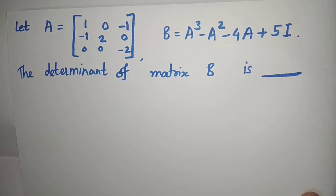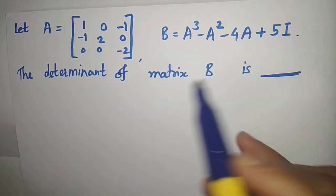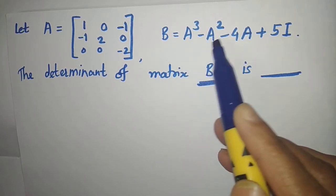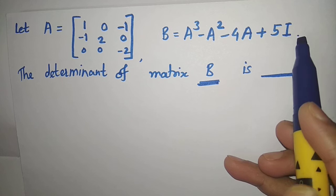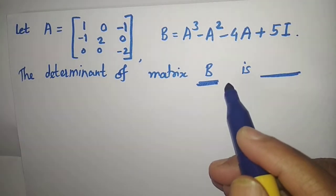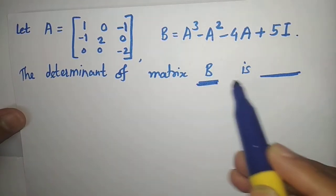Hello friends, welcome to UGPG Mathematics. In this video I am going to solve a problem from the GATE exam. The question is about the determinant of a matrix B, where B is A³ - A² - 4A + 5I, and the matrix A is given. We will use Cayley-Hamilton theorem to find the determinant of matrix B.